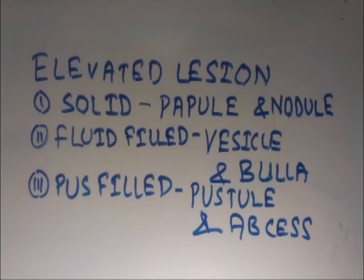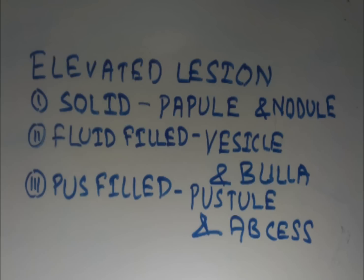The second category is elevated lesions, subdivided into three types: solid, fluid-filled, and pus-filled. Solid lesions less than 0.5 centimeters are called papules, and larger ones are called nodules. Fluid-filled small lesions are called vesicles, and larger ones are called bullae. In the pus-filled category, small lesions are called pustules and larger lesions are called abscesses.